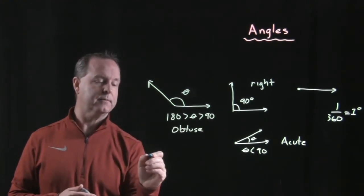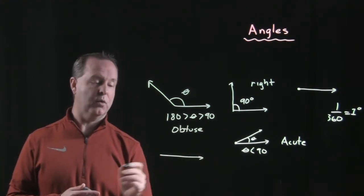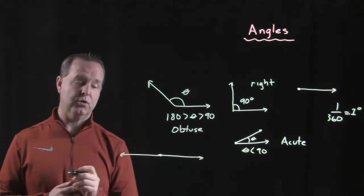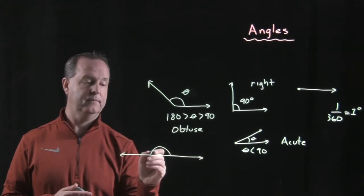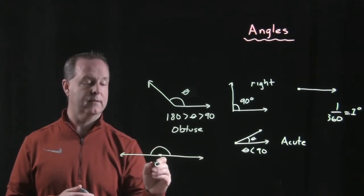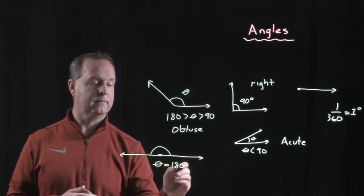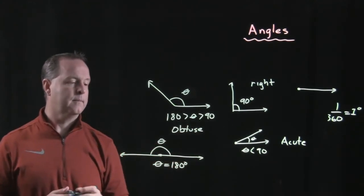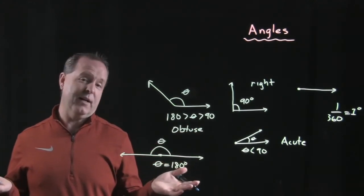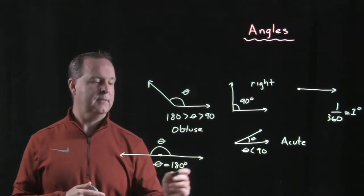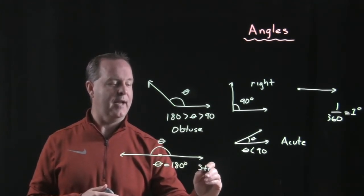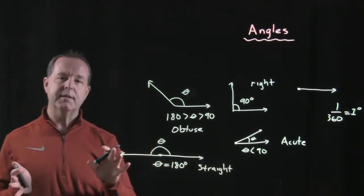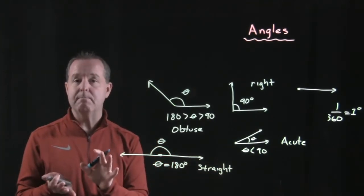And then we have one more angle that we would typically use, where I have my initial ray but I would have a terminal ray going in the opposite direction, so that the angle then would be 180 degrees. And we would call this one a straight angle.